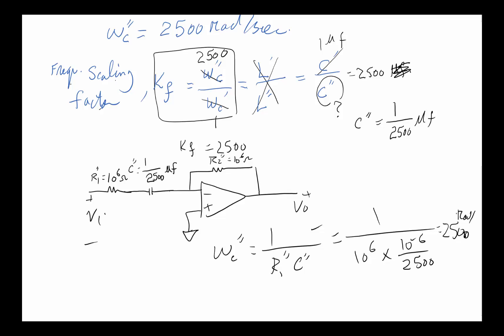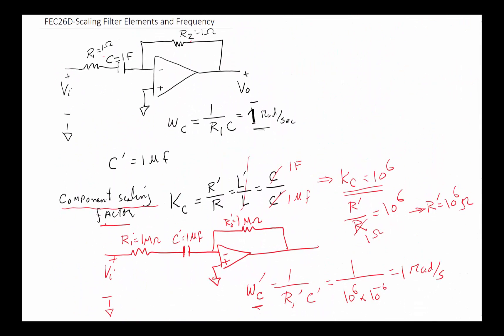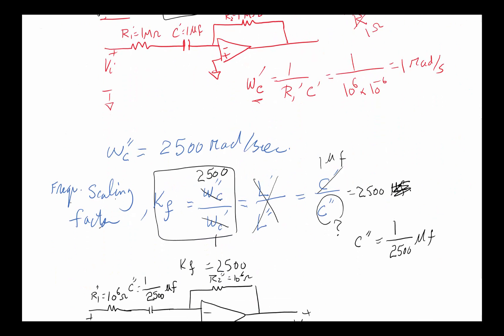To recap: anytime you have a filter and want to change the component values, use the component scaling factor K_C. The new resistor over the old resistor must equal the new inductor over the old inductor, which must equal the old capacitor over the new capacitor — note the capacitor is reversed. As long as all those relationships hold and equal K_C, you've scaled your components without changing the filter's behavior. For changing the cutoff frequency, use frequency scaling K_F. Both techniques apply to passive and active filters.